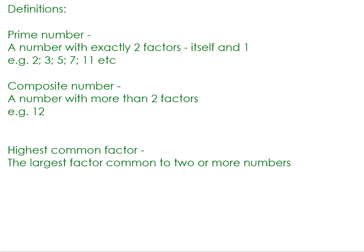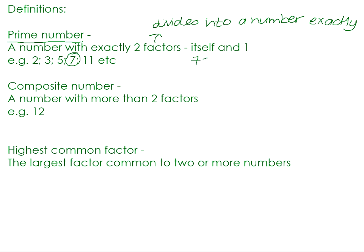First of all, a prime number is a number with exactly two factors. And a factor is a number that divides into another number exactly. For example, if you think about 7, the only two numbers that can divide exactly into 7 are 1 and 7 — itself and 1. And that makes 7 a prime number.